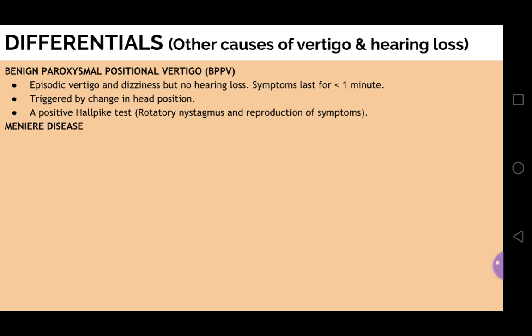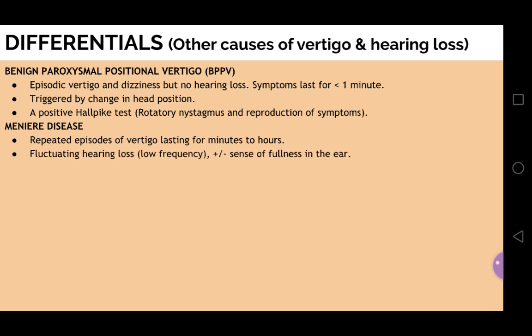Another important differential is Meniere's disease. In this, there are repeated episodes of vertigo which last for minutes to hours — always more than 20 minutes. There is hearing loss which is fluctuating, sometimes less and sometimes more, and it affects low-frequency sounds. The patient may also have a sense of fullness in the ear and low-pitch tinnitus — a ringing sound in the ear.